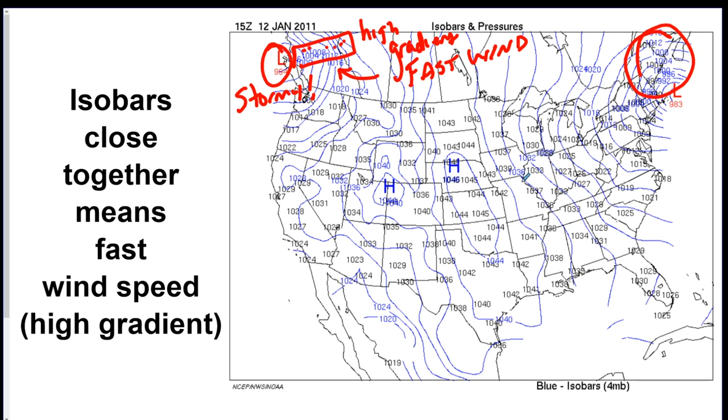It's directly related to the steepness of contour lines. Remember we said for contour maps that when the lines are close together, it's steep sloped like a cliff? Well, it's the same premise. Except for pressure, when the lines are close together, it's fast wind.